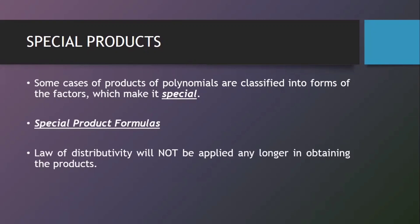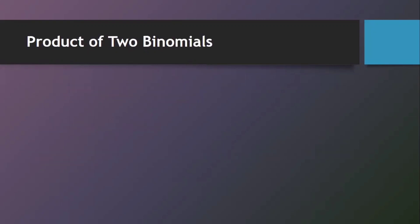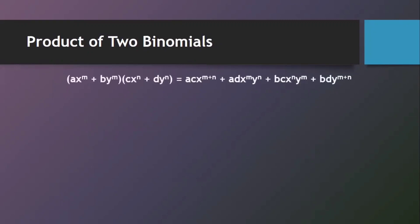Let's have the first special product: the product of two binomials, which has this formula. Taking a closer look at the formula, the FOIL method is applied. We multiply the first terms: AX raised to M and CX raised to N. Then the outer term: AX raised to M multiplied by DY raised to N. Then the inner term: BY raised to M multiplied by CX raised to N. And the last term: BY raised to M multiplied by DY raised to N.